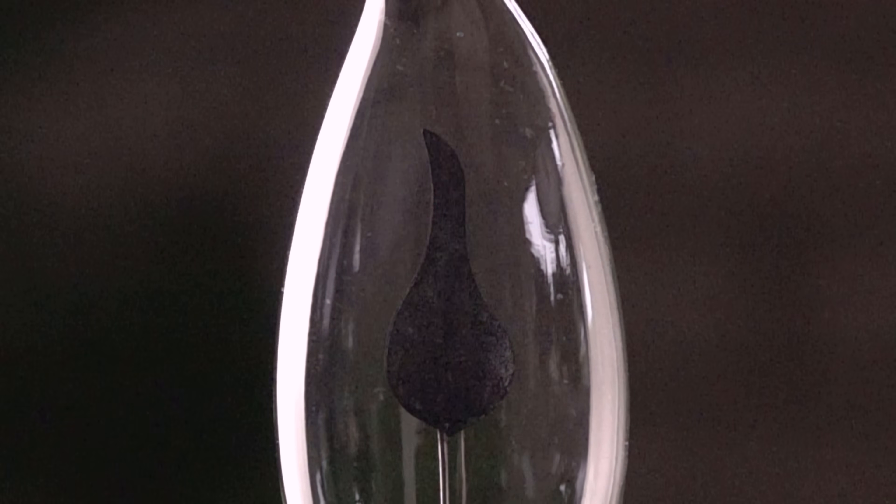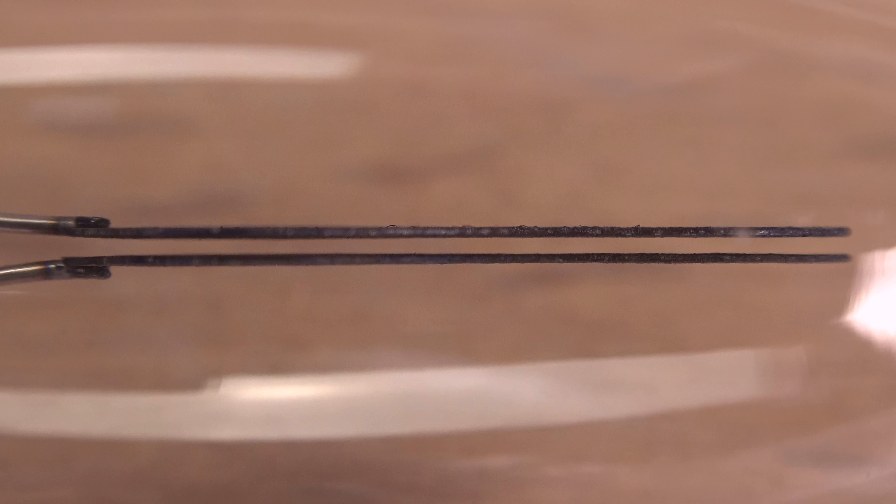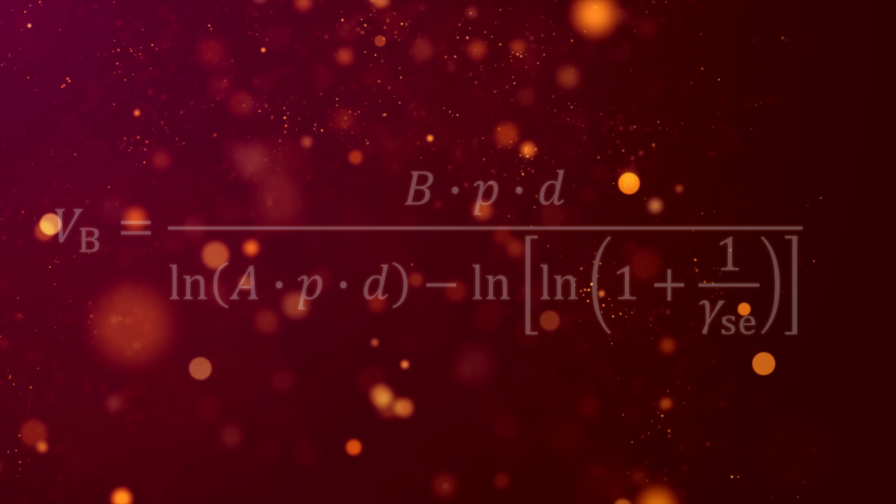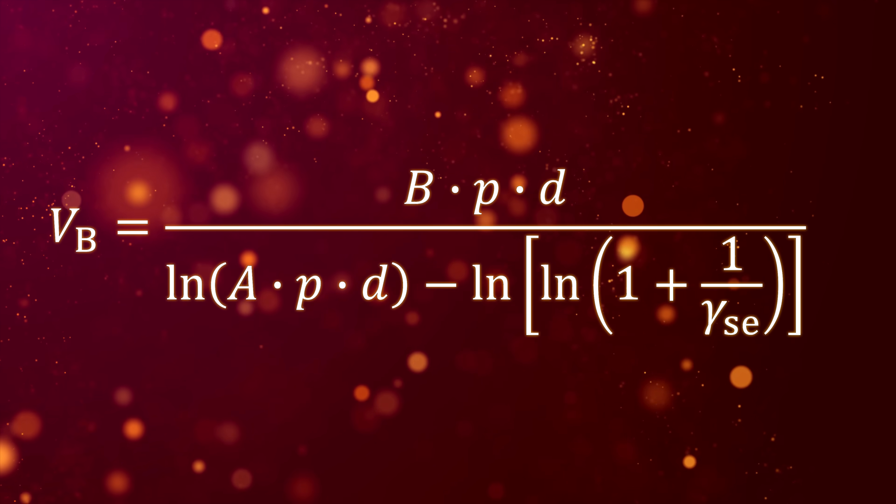This is a design fault. In the better bulbs, the electrode tips are bent away from each other to increase their distance, making the breakdown more likely to start at the bottom and move upwards.